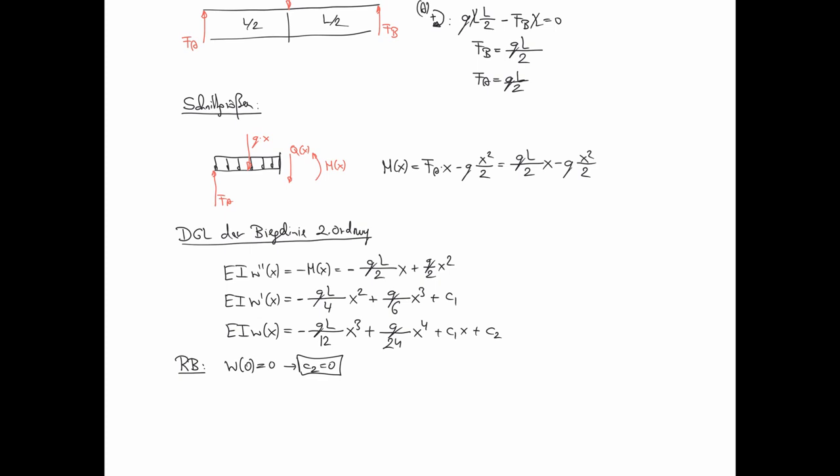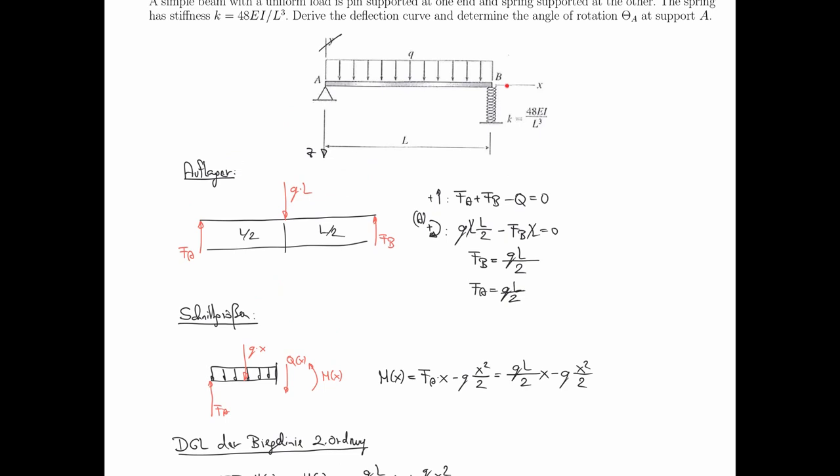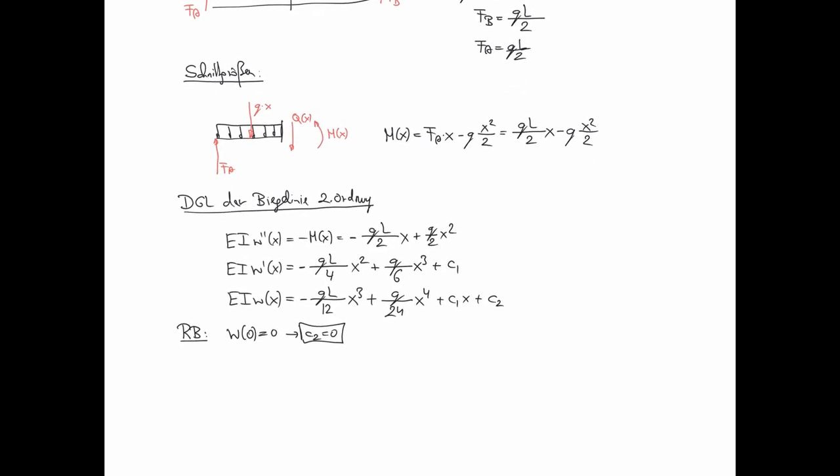Und bei der Feder jetzt brauchen wir die Federabsenkung. Wie kriegen wir die Federabsenkung? Also der Zusammenhang ist einmal W an der Stelle L ist Delta X von der Feder. Und was ist Delta X? Also ich schreibe einmal her: F, nämlich FB. Das ist die geforderte Kraft, die die Feder aufbringen muss. Ist K mal Delta X.